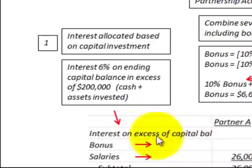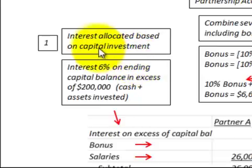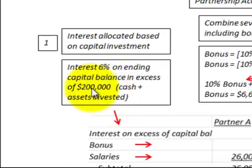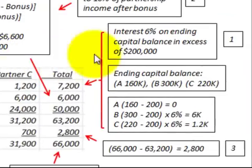Let's look at the interest on the excess of the capital balance. This interest is allocated based on the capital investment of each partner. The percentage we're going to be using is 6%, and that's going to be on the ending capital balance in excess of $200,000. The capital for each partner is the cash plus assets they have invested, and we're only calculating interest over their $200,000 capital balance. So our interest is 6% on the ending capital balance in excess of $200,000.